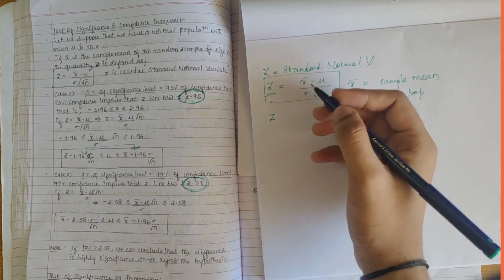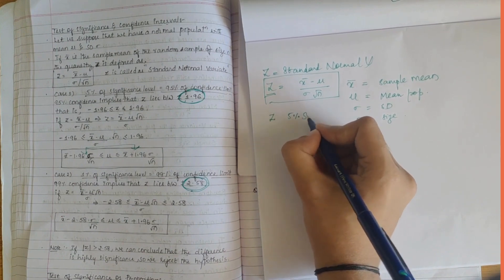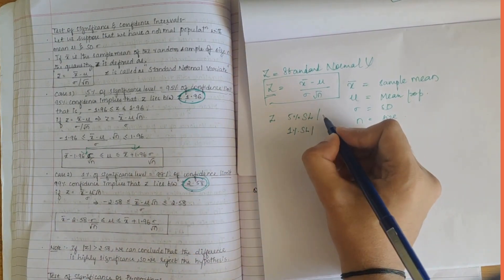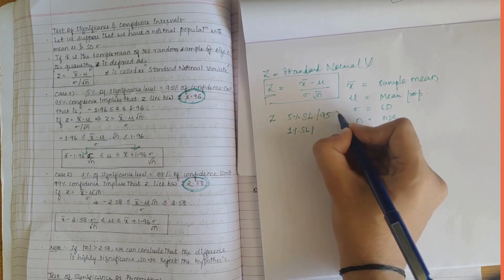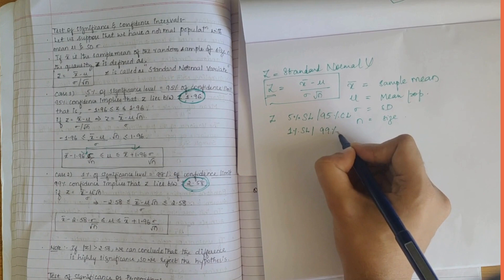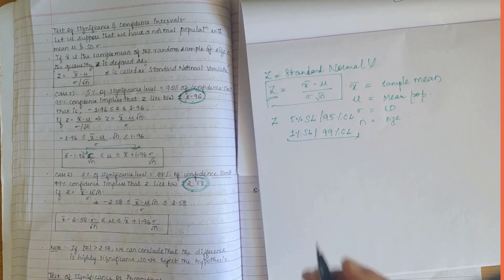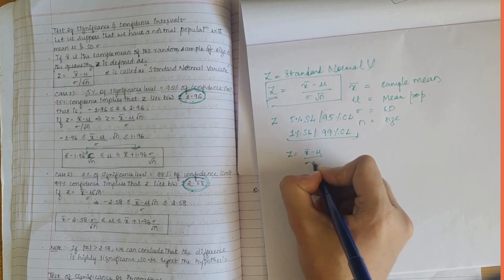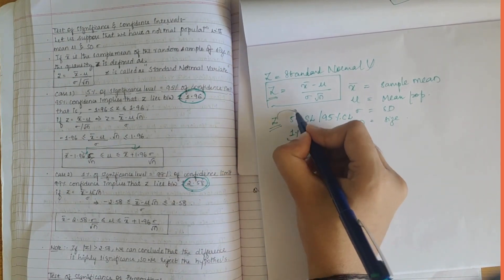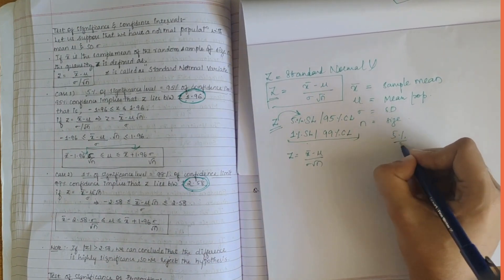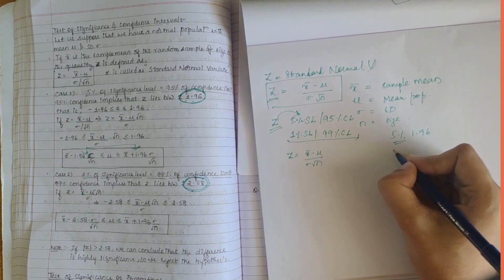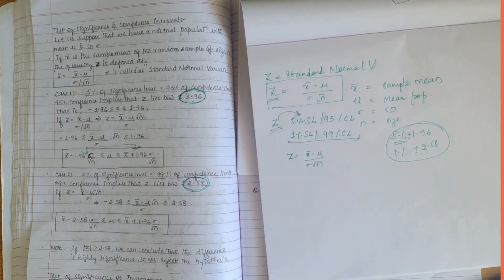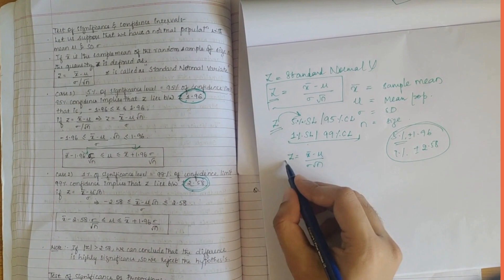Depending on the value of z, there are two confidence intervals. One is at the five percent significance level and the other is at the one percent significance level. The five percent significance level can also be written as 95 percent confidence level, and one percent significance level as 99 percent confidence level. For five percent it is plus or minus 1.96, and for one percent it is plus or minus 2.58. These values are very important to remember.